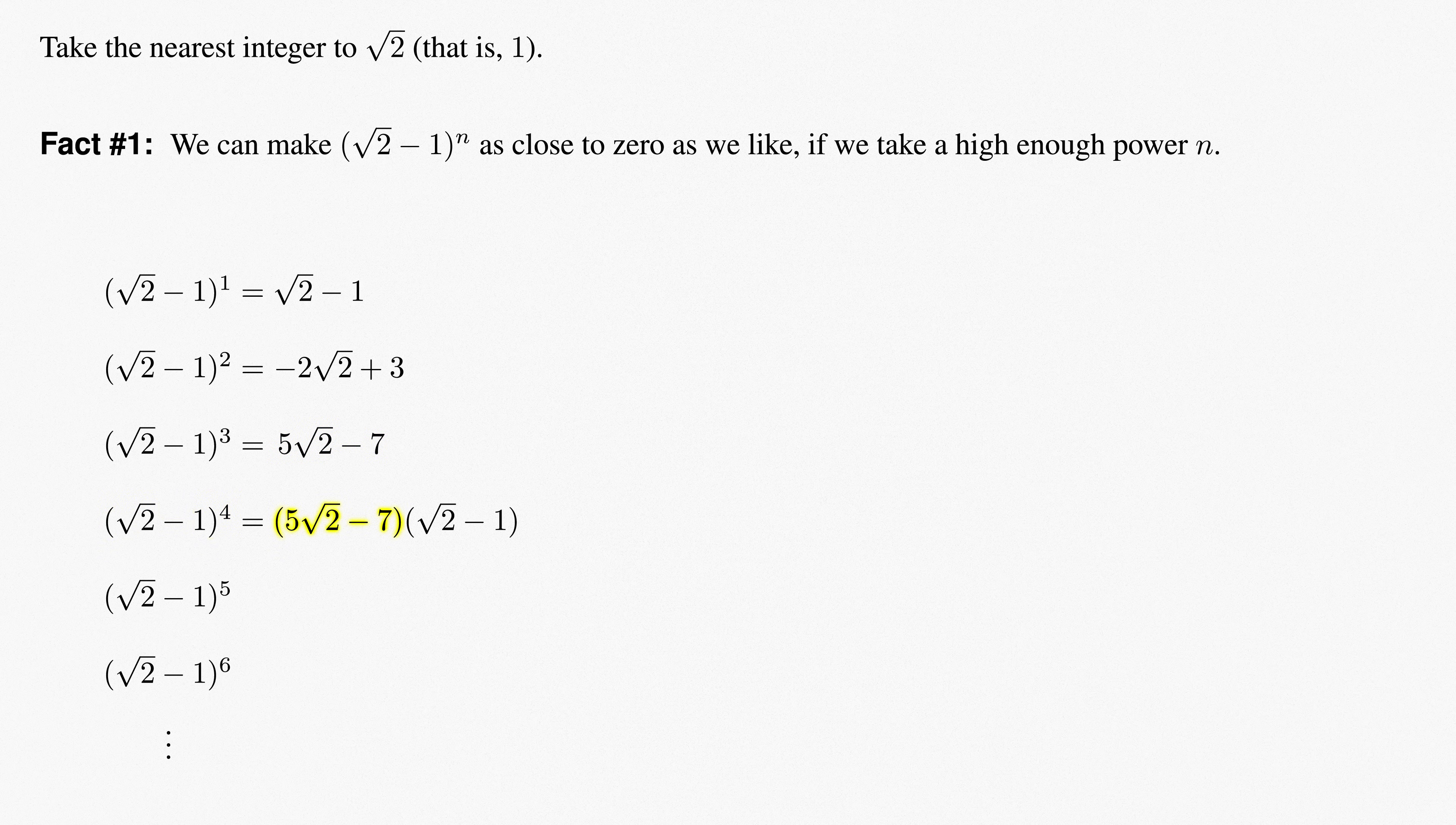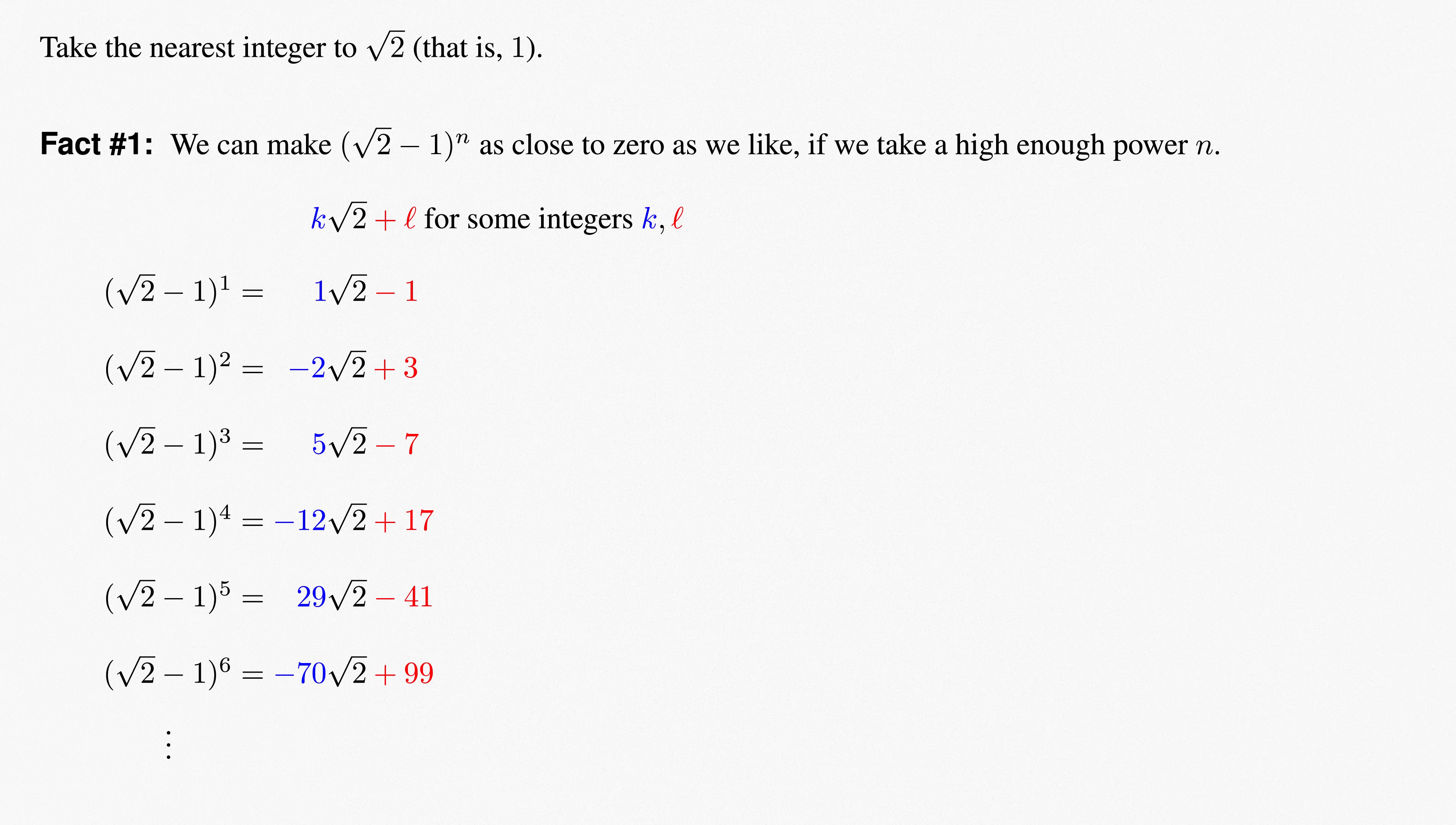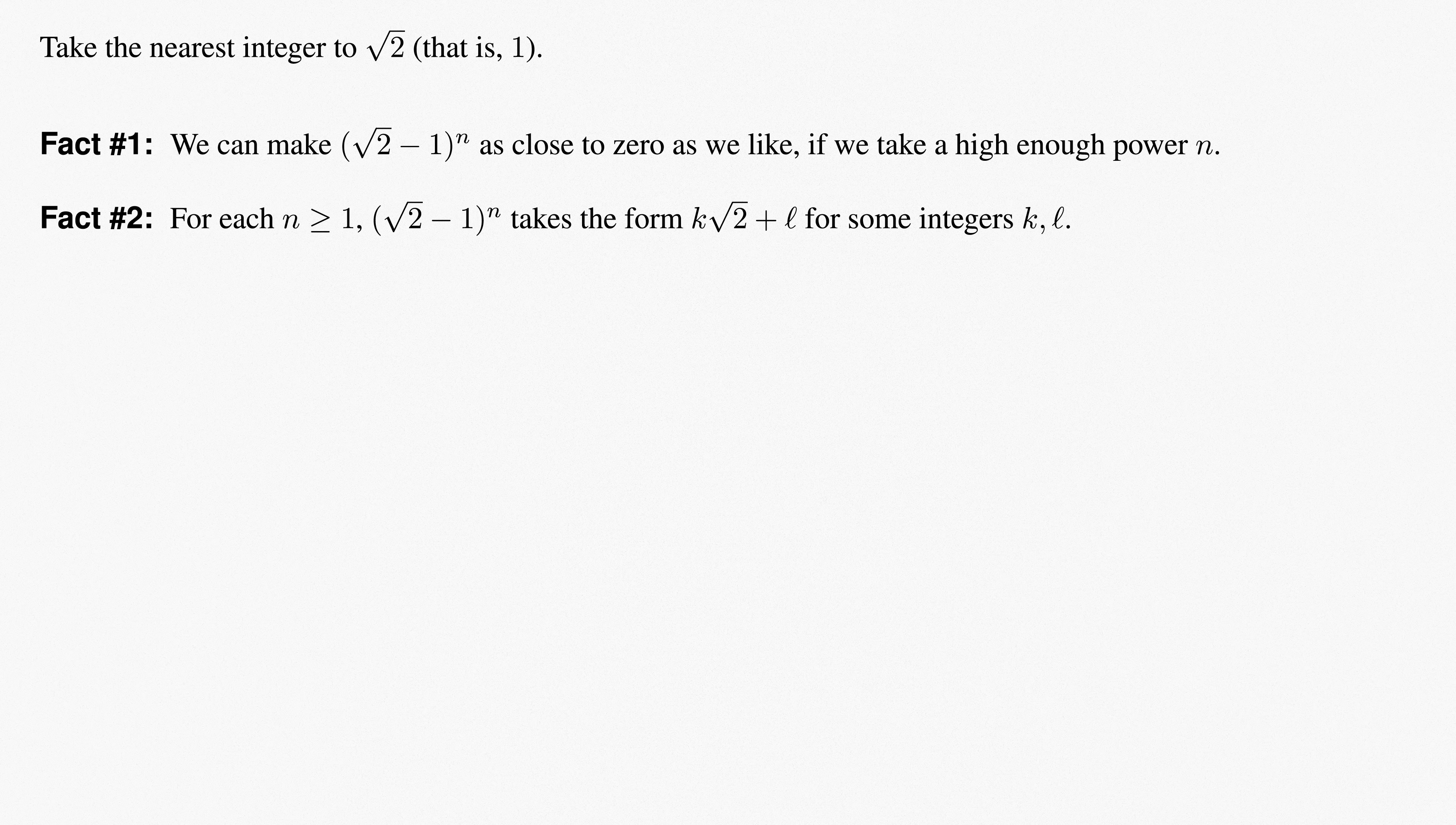One more. Foiling out 5 root 2 minus 7 times root 2 minus 1 gives 10 minus 12 root 2 plus 7, which simplifies to negative 12 root 2 plus 17. And so on. What matters here isn't the exact numbers, but just the form that they take. Each one is some integer times root 2 plus some integer. That is, k root 2 plus l for some integers k and l. We'll call this fact number 2. Note that this fact comes from the very definition of the square root of 2, that its square simplifies to 2. Fact number 2 could be proven by induction for those so inclined, but it's clear enough what's happening that we won't bother here.